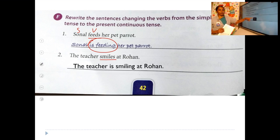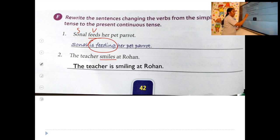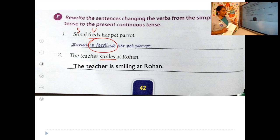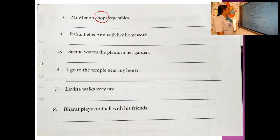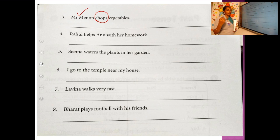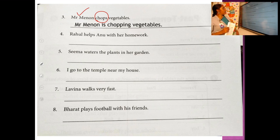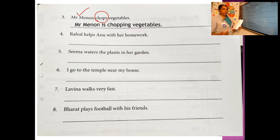Note the spelling: 'smile' becomes 'smiling' — drop the -e before adding -ing. Don't write 'smileing' — that's wrong. Third sentence: 'Mr. Manon chops vegetables.' Chops means cutting. Mr. Manon is singular, so: Mr. Manon is chopping vegetables. Note the spelling — the 'p' is doubled in 'chopping.' The -ing form is formed in many ways, so be careful with spelling.